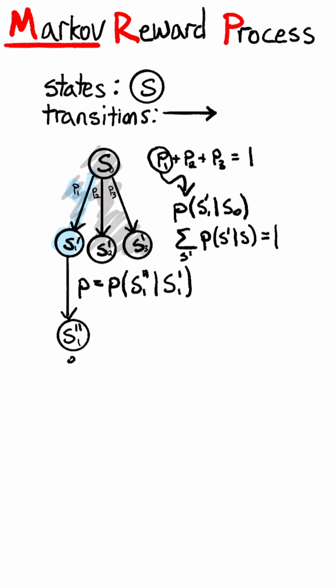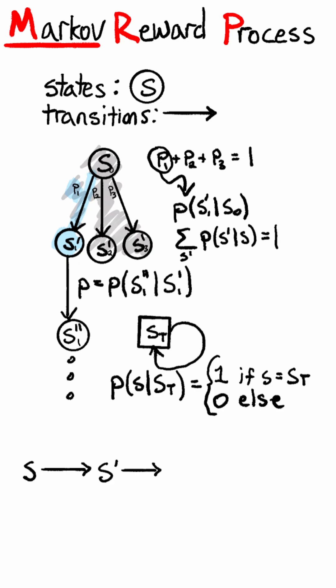Some processes also contain terminal states, which I'll distinguish with a square instead of a circle. One can't leave a terminal state, since the probability of remaining in it is one. We can imagine a sequence of states visited by a process, which will end if a terminal one is encountered. However, each transition only depends on the two states involved.